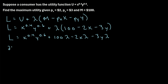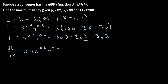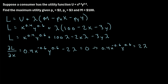The next step is to take the derivative of the Lagrangian with respect to x. We get 0.4 times x^(negative 0.6) times y^0.6 minus 2 lambda. We set this equal to 0 and solve for lambda. Moving the 2 lambda term to the other side and dividing both sides by 2, we find lambda = 0.2 times x^(negative 0.6) times y^0.6.